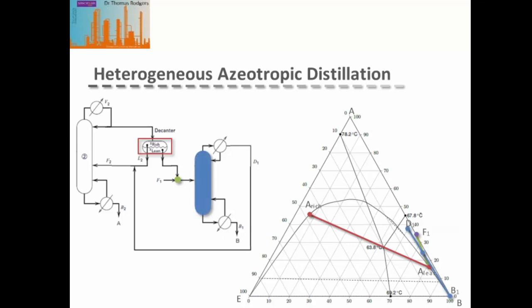Now if this diagram had residue curves on it, which it can do, we would know where we can put our distillate composition. However, if I did have residue curves on this diagram, it would be even more difficult to see what was going on. So I've left them off and therefore I've just gone up to an approximate point D1 representing about where it would be with our residue curves.